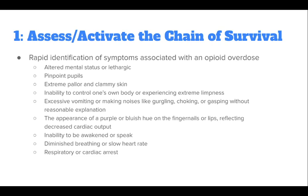The opioid algorithm requires the rapid identification of symptoms associated with opioid overdose. As explained by MedlinePlus, symptoms may include altered mental status or lethargic behavior, pinpoint pupils, extreme pallor, and clammy skin, as well as inability to control one's own body or experiencing extreme limpness.